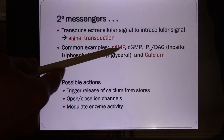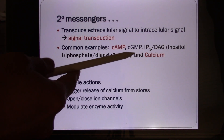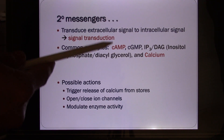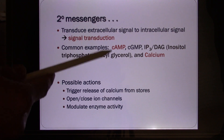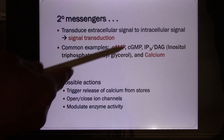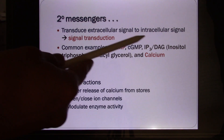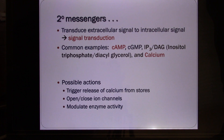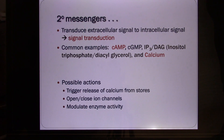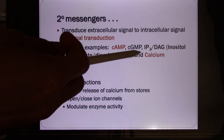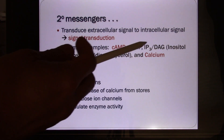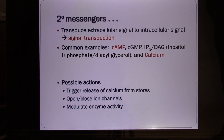You can have other second messengers too. You can have cyclic GMP — when we talk about the sensory system, your rods and cones, these two photoreceptors on your retina actually use cyclic GMP. So different systems use different kinds of second messengers. There's also IP3, DAG, and calcium as second messenger systems.